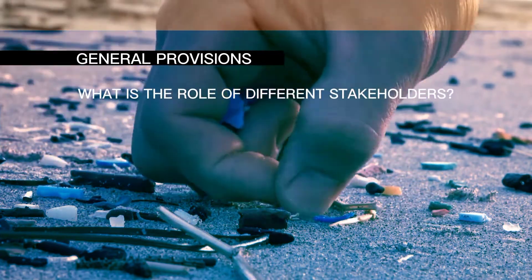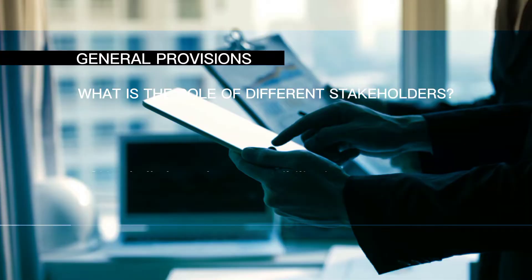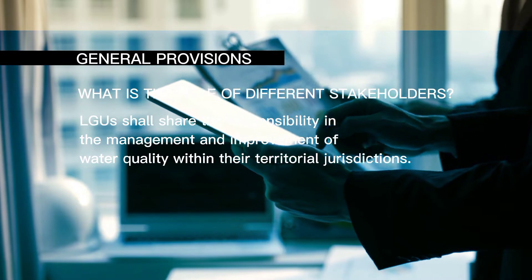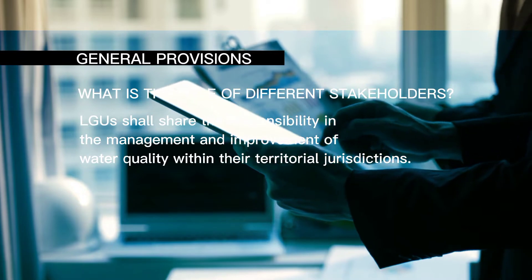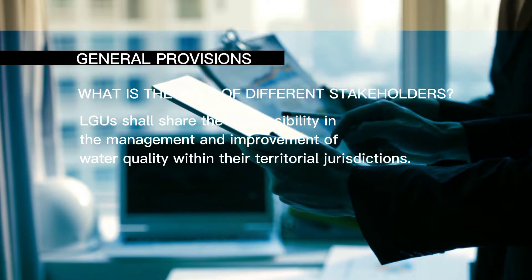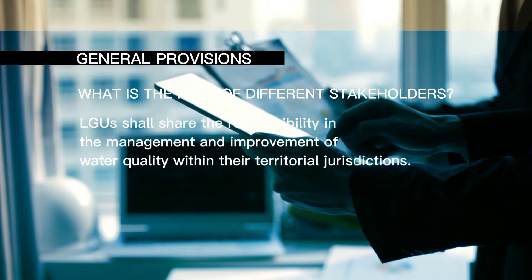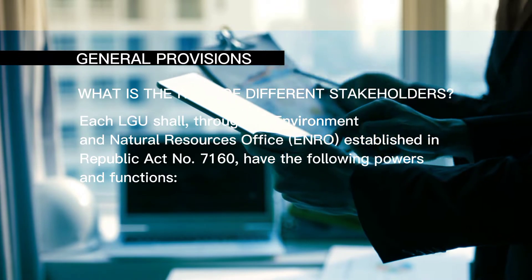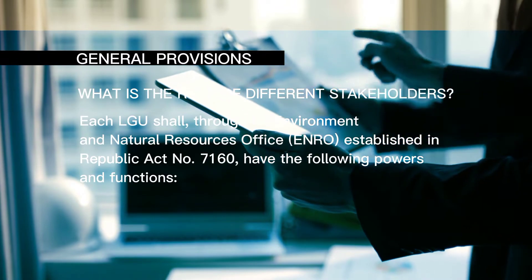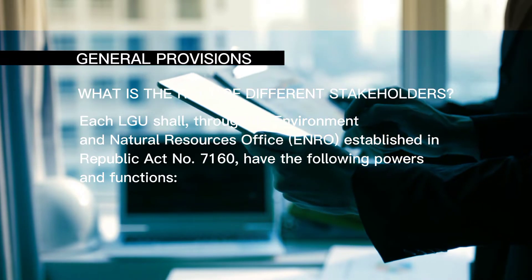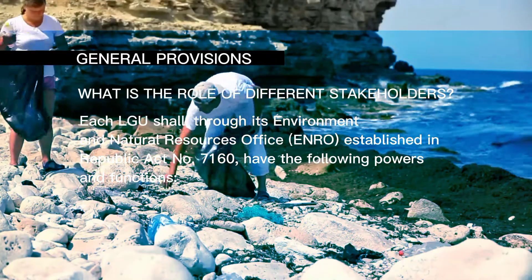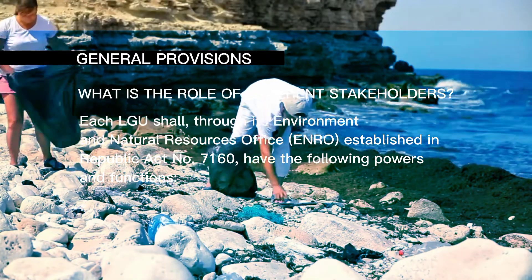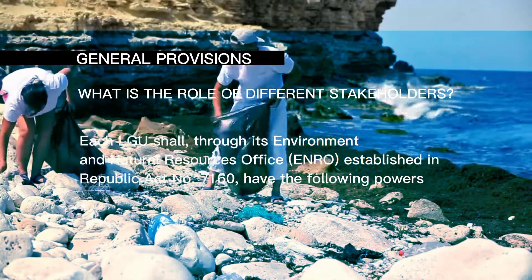What is the role of different stakeholders? LGUs shall share the responsibility in the management and improvement of water quality within their territorial jurisdictions. Each LGU shall, through its Environment and Natural Resources Office (ENRO) established in Republic Act No. 7160, have the following powers and functions.